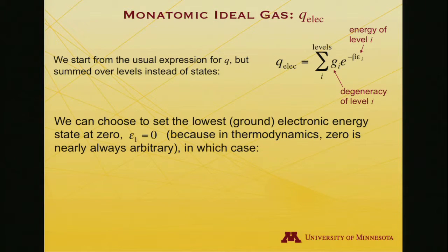So we can choose to set the ground state electronic energy as the zero of energy. Thermodynamics is essentially always about changes in properties, changes in energy, changes in enthalpy. And as a result, where you set zero is an arbitrary choice, but some zeros are more convenient for mathematical purposes than others. And so we're going to adopt the convention for this system that the zero of energy is the ground electronic state energy.